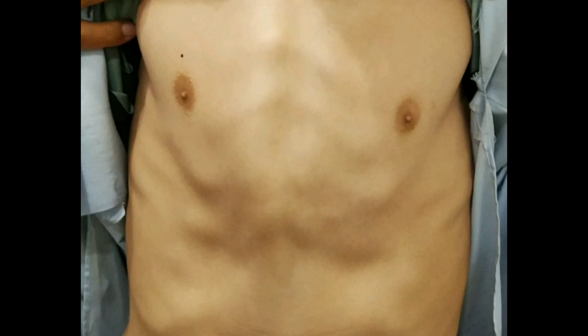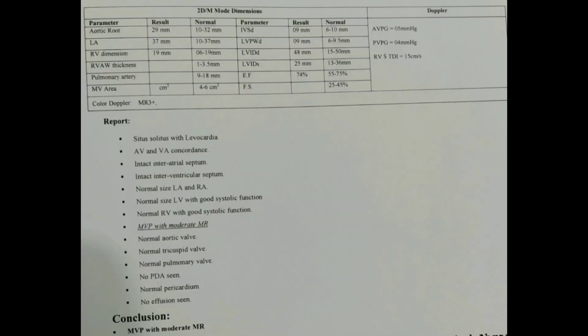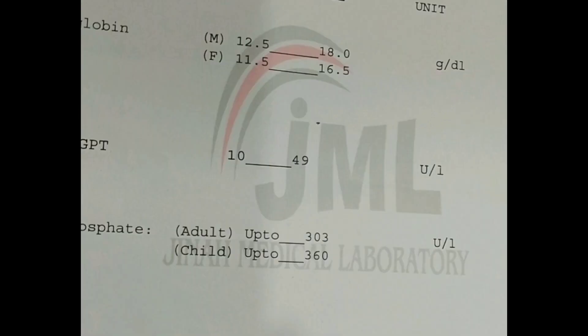Now that was the case of Marfan syndrome. You can see superior-temporal subluxation. You can also see pectus excavatum from the front view, then the side view from one side, and the side view from the other side. On echocardiography there was moderate mitral regurgitation, and alkaline phosphatase was also increased.